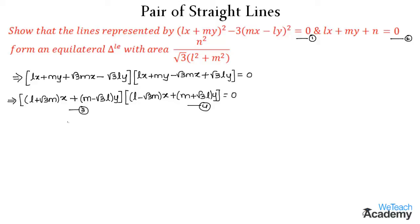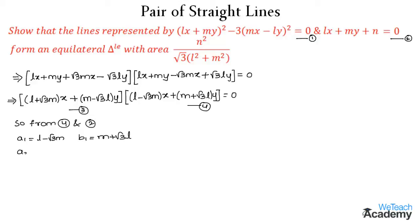Now let us check whether these lines form an equilateral triangle using equation 4 and equation 2. From equation 4, we get A₁ = L − √3·M and B₁ = M + √3·L. From equation 2, A₂ = L and B₂ = M. Now let us find the angle between both lines.